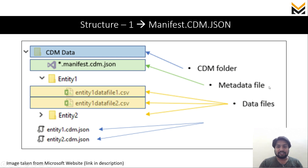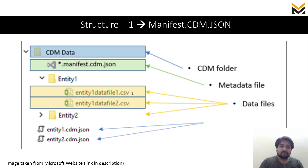The manifest.cdm.json is the core file, and there are two format folders containing entity files. Corresponding to each entity file there will be a .cdm.json file. These individual entity CDM files describe the metadata of the CSV files — what columns exist, whether they are date columns, string columns, and any formulas applied. The manifest.cdm.json serves as the upper-level metadata for all things present in a CDM data folder.